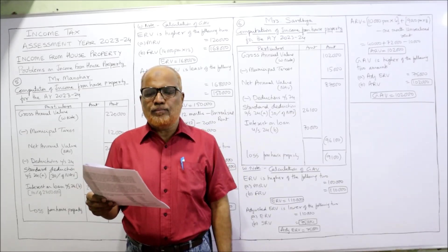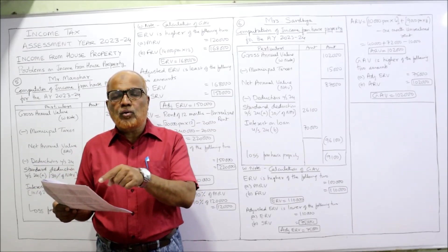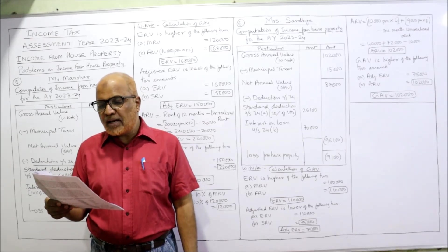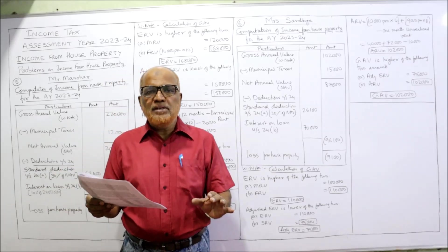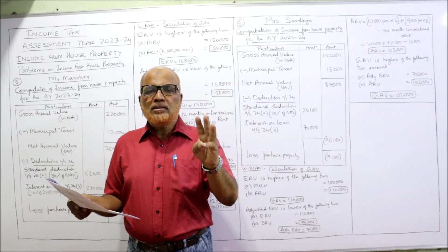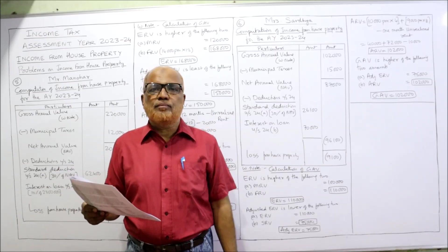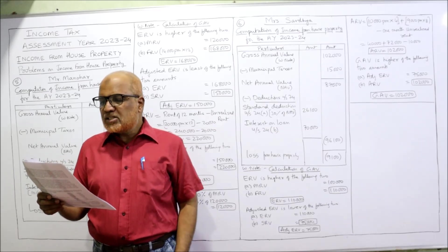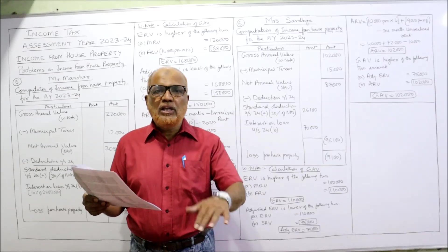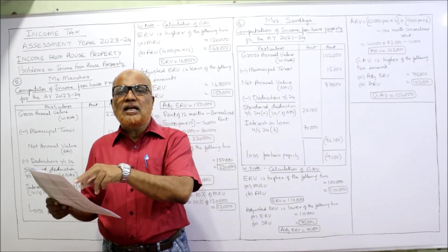Municipal value of the house is 1,00,000, fair rental value 1,10,000, and standard rent 75,000 — again the house is governed by the Rent Control Act since SRV is given. Mrs. Devi did not pay the rent for July and was made to vacate on 31st July 2022. She paid rent for April, May, and June only — three months. July rent of 10,000 is unrealized. On 1st August, the house was immediately let out to Mrs. Shanti at 9,000 per month.